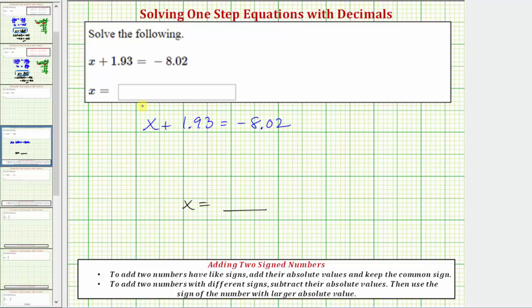So looking at the left side of the equation, to isolate x, we don't want this plus 1.93 here. So we need to undo this addition by performing the inverse operation or opposite operation of plus 1.93. And the opposite operation of addition is subtraction. And therefore, to solve for x, we will subtract 1.93 on both sides of the equation.